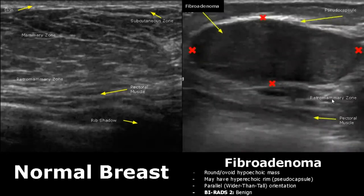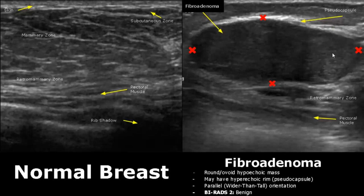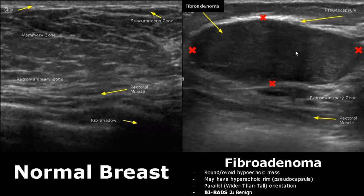A fibroadenoma is a benign tumor which will appear as a hypoechoic round or ovoid mass. It may have a hyperechoic rim known as a pseudo-capsule and has a parallel orientation — it is wider than tall. This is a sign of a benign lesion. It is classified as BIRADS 2, which is benign. However, routine screening mammography should be done.